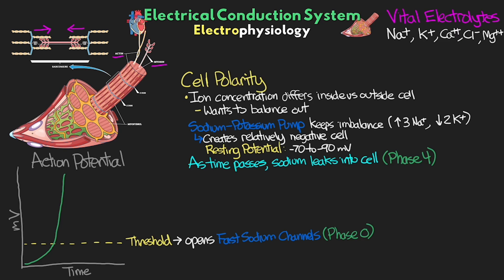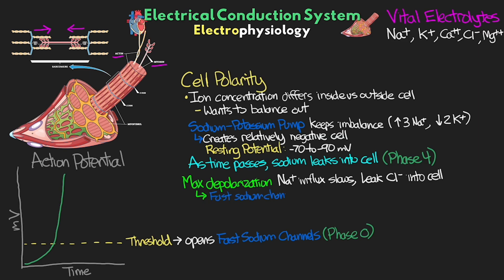This depolarization is then transmitted from cell to cell until they are all depolarized. When the cell reaches its peak charge — maximally depolarized — the sodium influx is going to be slowed down, and then we start to have a leak of negatively charged chloride ions into the cell as well. This slowdown leads to the closing of those fast sodium channels and then the opening of two other channels — the slow sodium channels and the calcium channels.